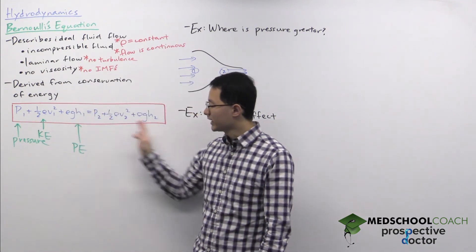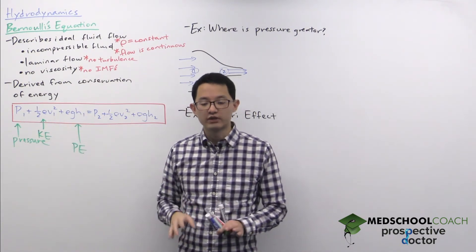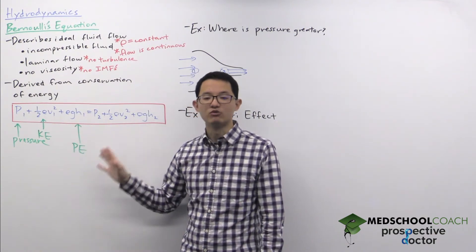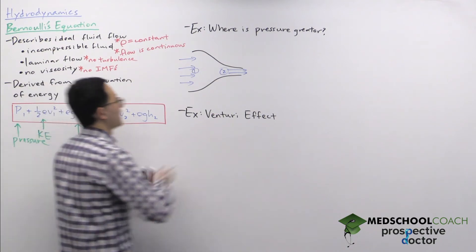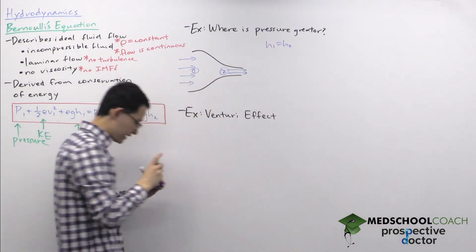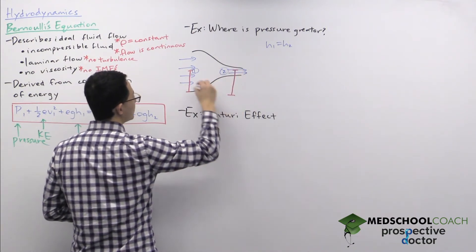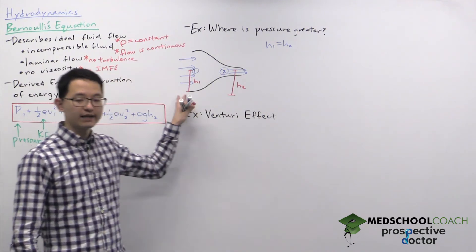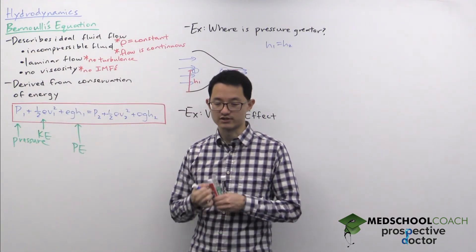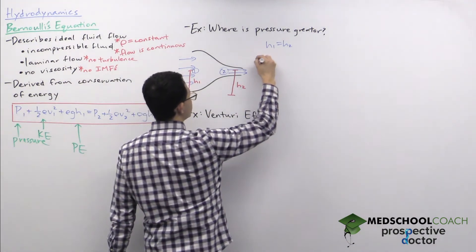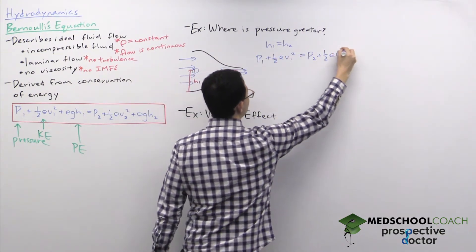When working with Bernoulli's equation — which has three terms on each side — often on the MCAT one of those terms will be equal on both sides and can be excluded. In this case, the height is the same on both sides: h1 equals h2. We can see this by drawing in the heights. Since they're equal, we can exclude the rho gh term, leaving us with: p1 + one-half rho v1 squared = p2 + one-half rho v2 squared.